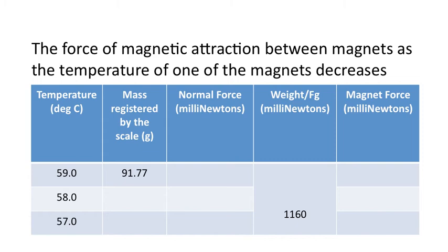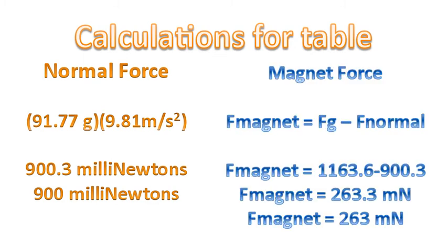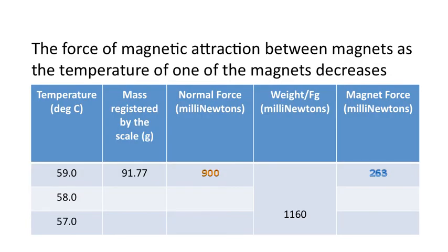So, here's the table I'd like you to complete. Please ensure you copy out the title. Please ensure you copy out the units. And this table will extend all the way down to 40 degrees Celsius. Notice we only write the weight or the force of gravity once. 1,160. Why only once? Because it doesn't change. To calculate the normal force, here's how we do it. We always take the mass as registered by the scale, multiply by the acceleration due to gravity, and there's our values. I've also written number in significant digits. To get our magnet force, here's the calculations for that. We subtract the weight and normal force. And for our first data point, it's 263 millinewtons. And so, there's our first row filled out. Your goal now is to complete the rest of the table.